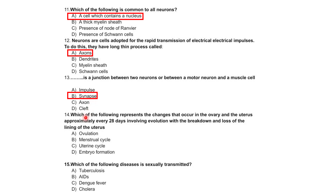Which of the following represents the changes that occur in the ovary and the uterus approximately every 28 days, involving ovulation with the breakdown and loss of the inner lining of the uterus? Options: ovulation, menstrual cycle, uterine cycle, or embryo formation.